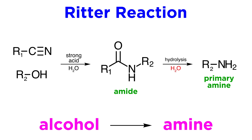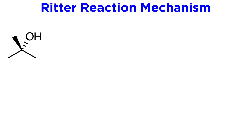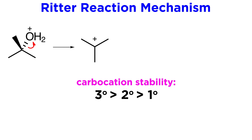The water is usually added at the end to quench the reaction. For tertiary alcohols, the mechanism is assumed to proceed as follows. First, the alcohol is protonated by the strong acid, which releases water and forms a tertiary carbocation. We know that carbocation stability follows the order tertiary, secondary, primary, so this is also their order of reactivity in the Ritter reaction.